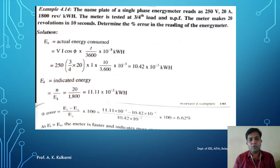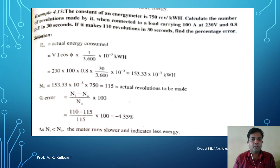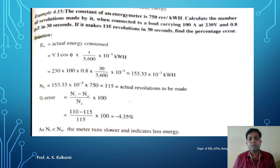Now let us solve a similar problem. The constant of an energy meter is 750 revolutions per kilowatt hour. Calculate the number of revolutions made by it when connected to a load carrying 100 ampere at 230 volts and 0.8 power factor in 30 seconds. If it makes 110 revolutions in 30 seconds, find the percentage error.